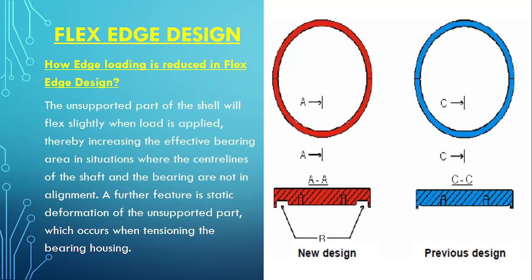Now, what is the advantage of this groove? As you can see, this part of the bearing is having an unsupported area. When the load is applied, this part has no material, so when the load is applied it tends to flex. Flex means suppose the surface is like this. When the load is applied it will flex. The shell will flex. When the shell flexes, it will effectively increase the bearing area.